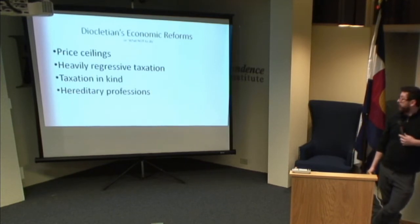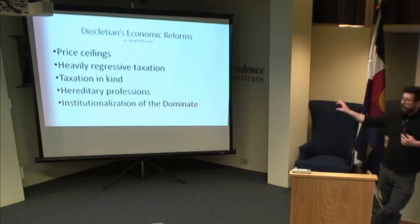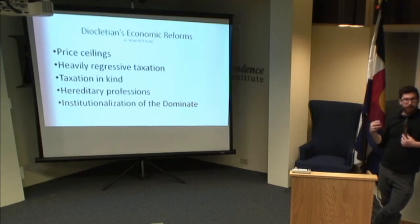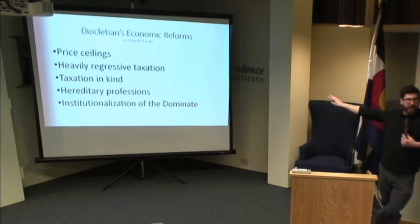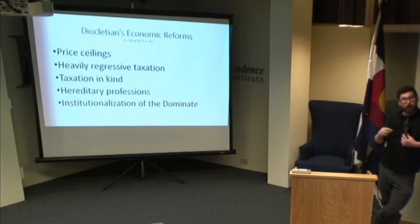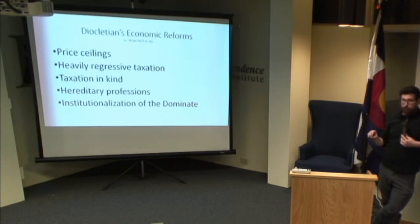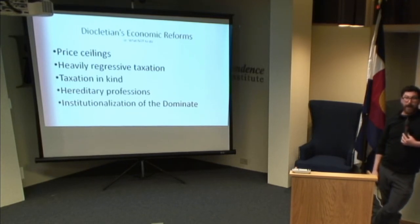Another thing Diocletian did was institute hereditary professions — he made it illegal to change your profession, and your sons had to enter that profession as well. This is really where feudalism comes from, and likely where we get surnames related to professions, like Baker. It pretty much invented serfdom. He also institutionalized the dominate — that lie Romans had been telling themselves, that they still lived in a republic, was over. Diocletian told senators they could still call themselves senators but would have no input. This is where Rome becomes an absolute monarchy.